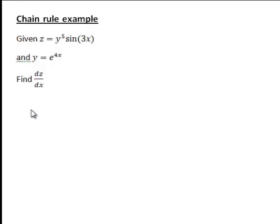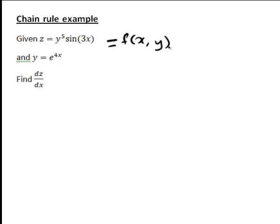Let's look at an example of using a chain rule to solve a problem. We want to find the derivative of z with respect to x, where z is equal to y to the 5 times sine 3x, and in turn y is equal to e to the 4x. One way we could think about this is z is clearly a function of x and y, and in turn y is also a function of x. So we can draw a tree diagram to see how to apply the chain rule here.